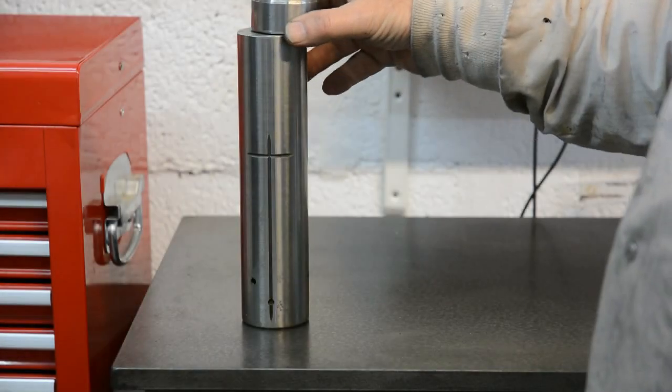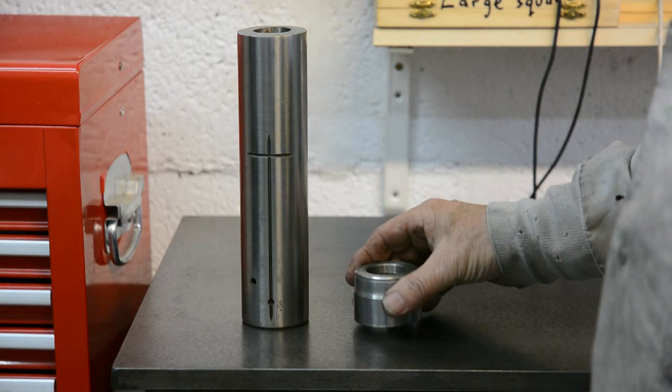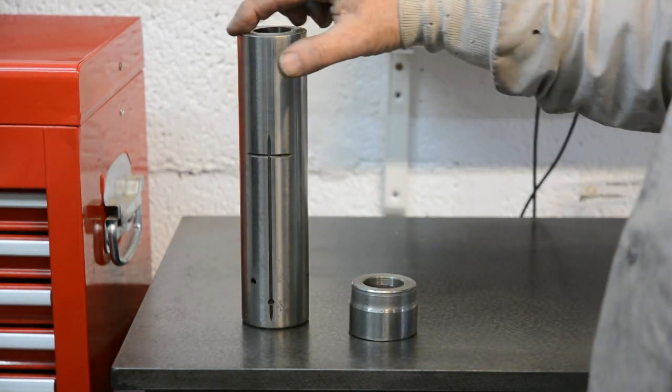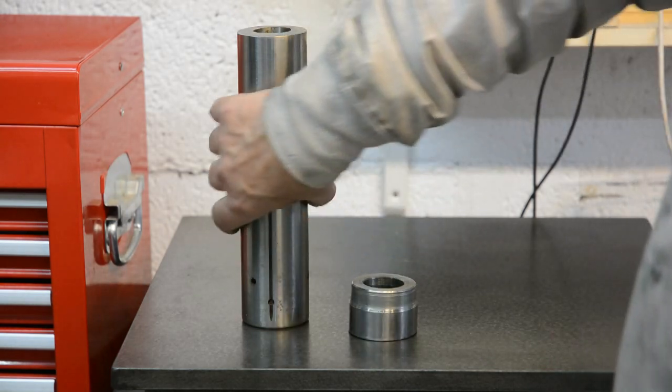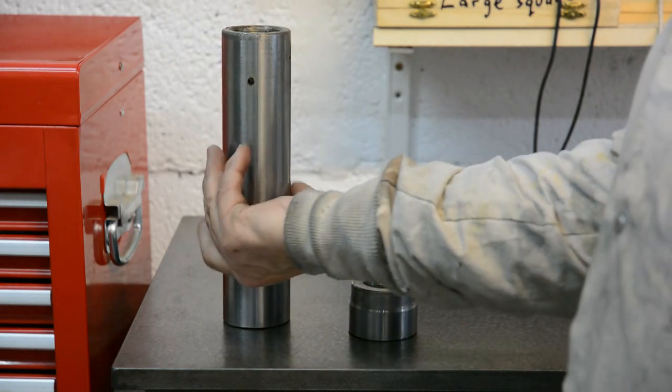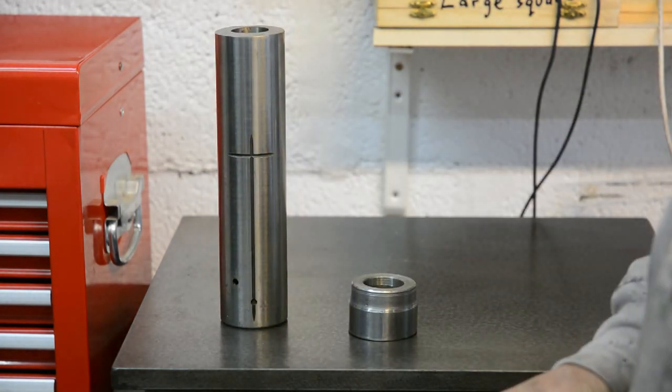Well I did finally cut the end off with a thin abrasive disc. Maybe sometime in the future when I'm doing some cylindrical grinding I'll put this in and grind this end square as well. Then that will enable me to use it either way out. But for the time being I'm quite happy with the way everything's turned out.